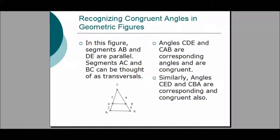It is important to be able to recognize congruent angles in geometric figures. In the figure below, segments AB and DE are parallel. We can think of segments AC and BC as transversals. Angles CDE and CAB are corresponding angles and are congruent. Similarly, Angle CED and Angle CBA, which are on the right, are also corresponding angles and are congruent.